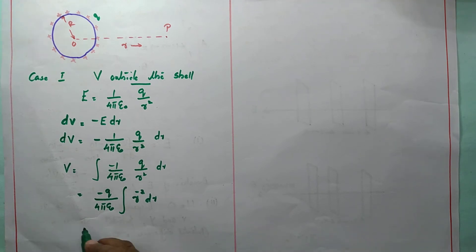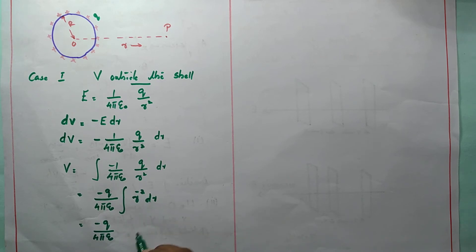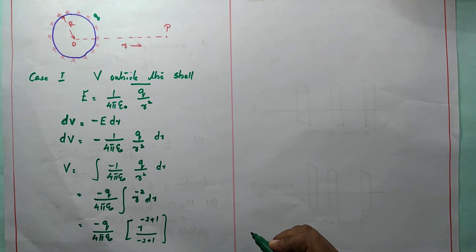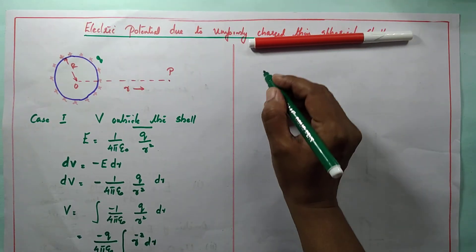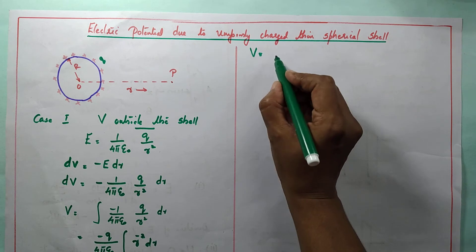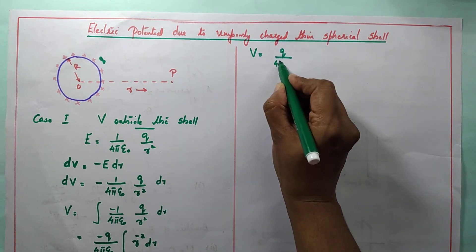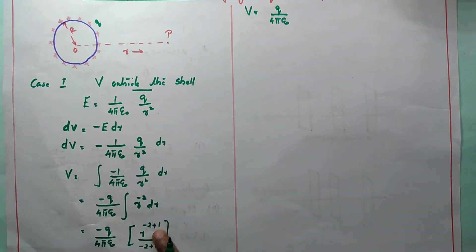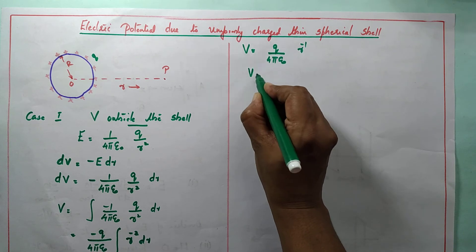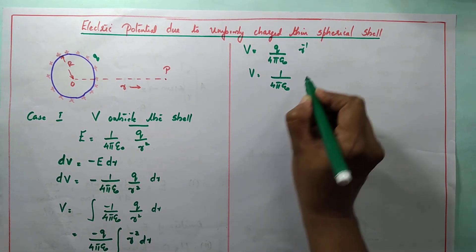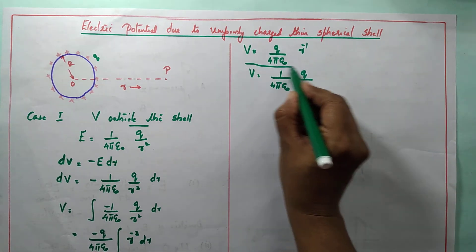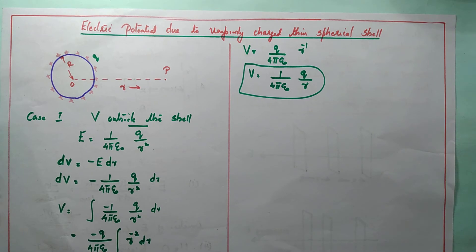The integral of r raised to minus 2 dr equals r raised to minus 2 plus 1 divided by minus 2 plus 1, which gives r raised to minus 1. Since minus 2 plus 1 is minus 1, the negatives cancel, and we get V equals Q divided by 4π ε₀ times r raised to minus 1. Therefore, V equals 1 by 4π ε₀ times Q divided by r. So the potential at a point outside the shell is V equals 1 by 4π ε₀ times Q divided by r.